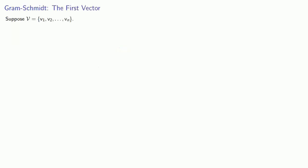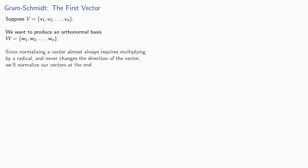Suppose we have our set of basis vectors. We want to produce an orthonormal basis. Since normalizing a vector almost always requires multiplying by a radical and never changes the direction of the vectors, we'll normalize our vectors at the end. Since you have to start somewhere, we'll start by letting w1 equal v1.